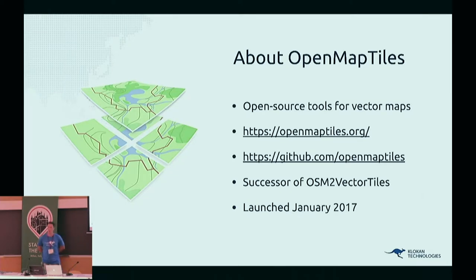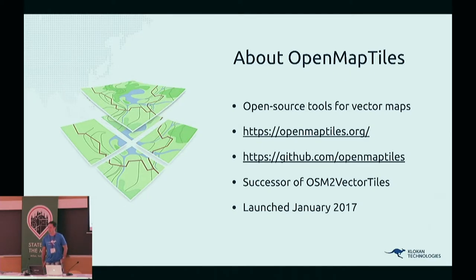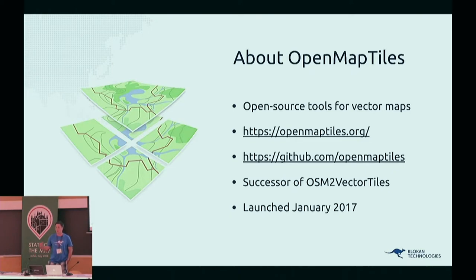It's a set of open source tools which you can use to generate vector tiles from OpenStreetMap and also from other data. You can combine OpenStreetMap with other open data or your own proprietary business data, all into a single map as you want.